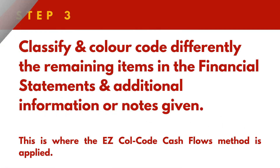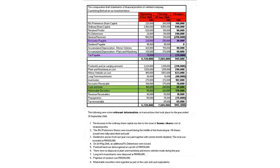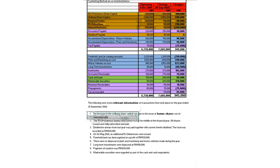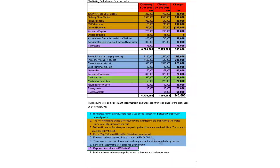Step 3: We need to classify and colour-code differently the remaining items in the financial statements, such as the statement of profit or loss, statement of financial position, statement of changes in equity, and notes to the account or any other additional information given, according to the colour key.